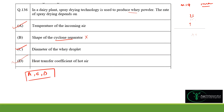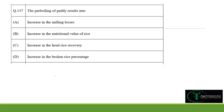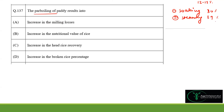Coming to question 137, related to parboiling of paddy. Parboiling is a three-step process: first, soaking of paddy to increase moisture content from approximately 13–14% to around 30%; then steaming, which increases moisture content to approximately 39–40%; and finally drying, which brings it back down to 13% for safe storage.